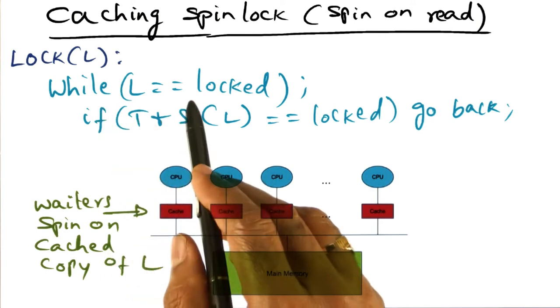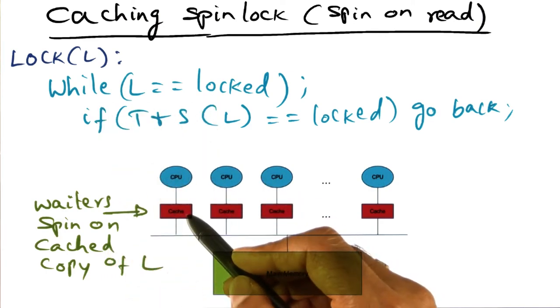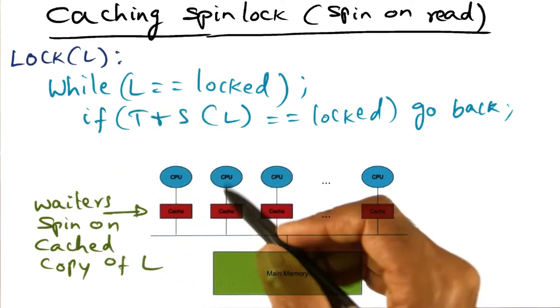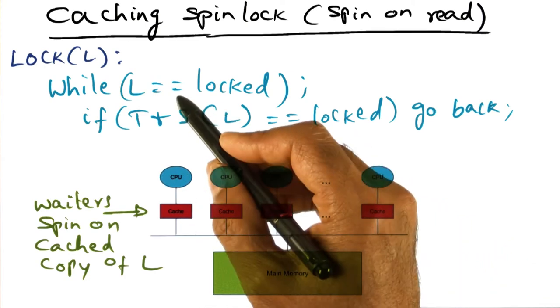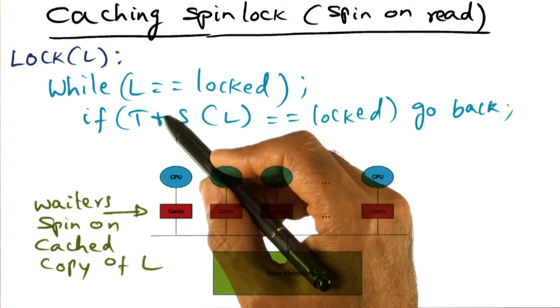And so if I'm waiting for the lock and I've been spinning here locally in my cache, when the lock is released, I'll notice that through the cache coherence mechanism, and I'll break out of this spin loop.